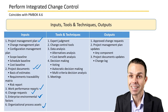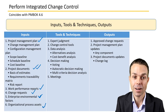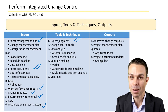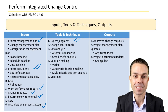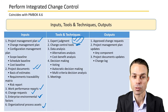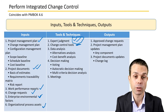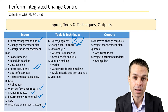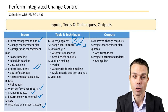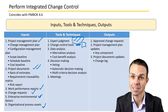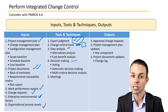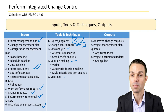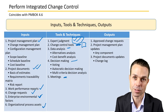Tools and techniques used as part of this process include expert judgment — you'll need experts in particular areas and gather information from them. There are change control tools that might involve systems, even your project management information system, if you've got baselined documents kept in that system. There's also any data analysis that might be needed, decision-making, and of course meetings to facilitate some of those decisions.